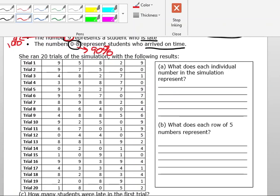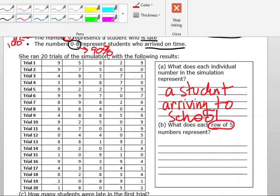So we can answer this question. What does each individual number in the simulation represent? So it represents a student arriving to school. And what does each row of five numbers represent? So that represents one trial, one trial of five students arriving to school.